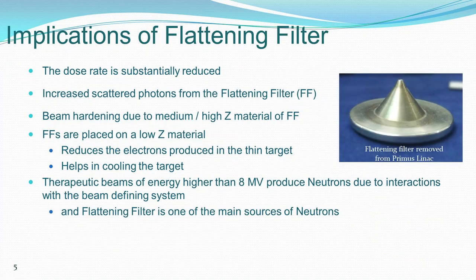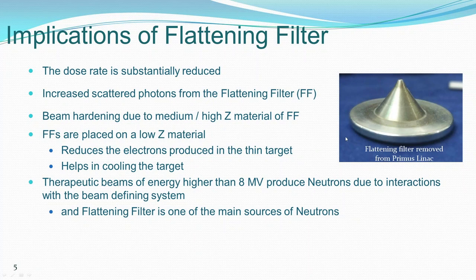What are the implications of having a flattening filter? This is an actual flattening filter I personally removed from a Primus linear accelerator. When you introduce this in the beam path, the dose rate is substantially reduced. There is increased scatter from the flattening filter, and the beam is hardened as soft X-rays are cut off. It is also placed on a low-Z material which helps cool the target. For beams above 8 MV, photonuclear interactions produce neutrons, and the flattening filter is one of the main neutron sources.